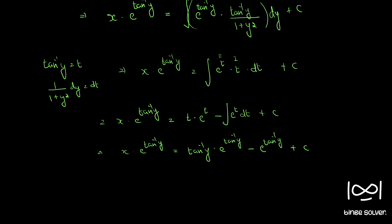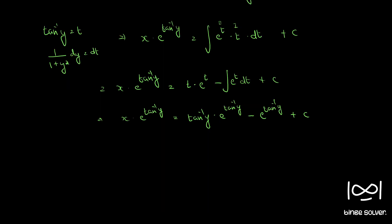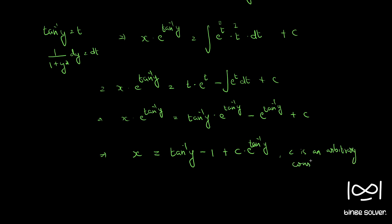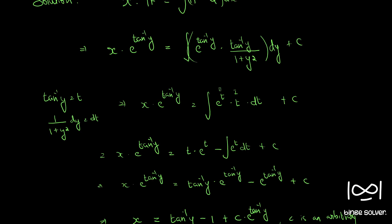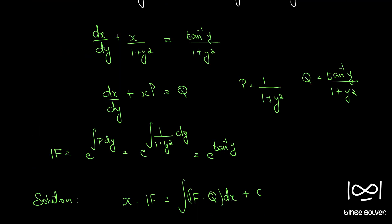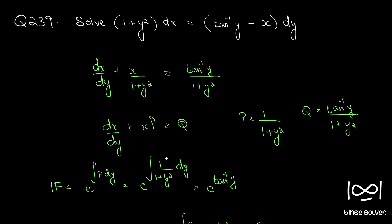Dividing throughout by e^(tan⁻¹y), we get the final solution. So x = tan⁻¹y minus 1 plus c·e^(-tan⁻¹y). This is the final solution to this question — question number 239. Thank you.